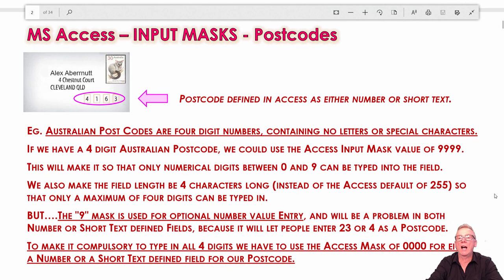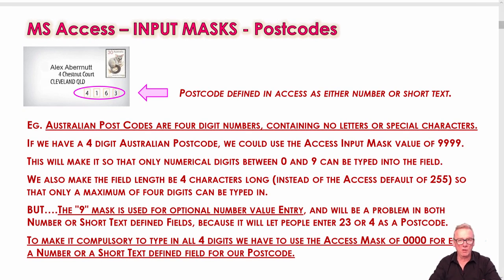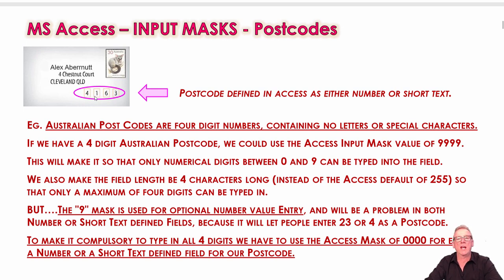Looking at Australian postcodes as an example — American zip codes are the same but with five digits instead of four. In Australia we have four-digit ones and all four digits must be entered. There are two masks in Access for numbers: the nine mask and the zero mask. The nine mask is optional — people could just put in two digits and stop. Whereas the zero mask, using 0000, means the digits must be typed in and must be numbers between zero and nine, ensuring all four numbers get filled in.